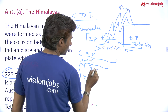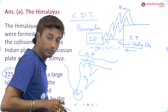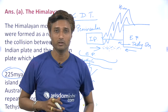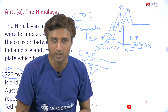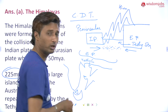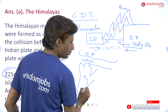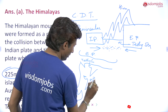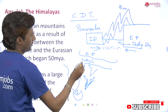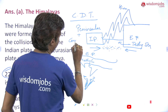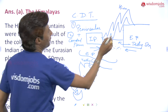This means the peninsular plateau was the first physiographic division of India to form. The four physiographic divisions are: first, the northern Himalayan mountains; second, the northern Indian plain; third, the peninsular plateau; and fourth, the coastal plain along with islands. Logically, first the peninsular plateau was formed, and along with it the coastal plains were also formed.